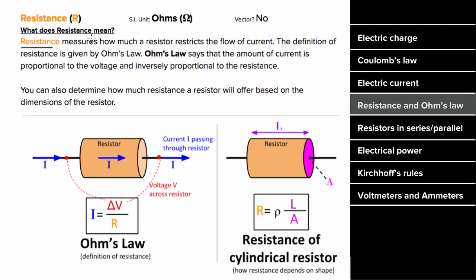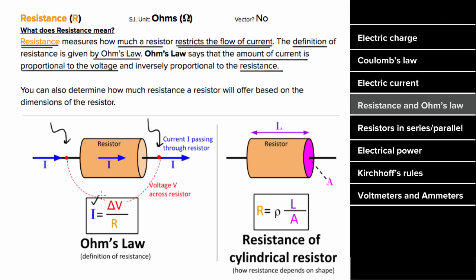The resistance of a circuit element measures how much that element will restrict the flow of current. The larger the resistance, the less current that will be allowed to flow. And the definition of resistance is given by Ohm's Law. Ohm's Law states that the amount of current that you'll get through a portion of a circuit is gonna be proportional to the voltage across that portion divided by the resistance of that portion of the circuit. So the larger the resistance, the less current will flow, but the greater the voltage supplied, the greater the current will be.